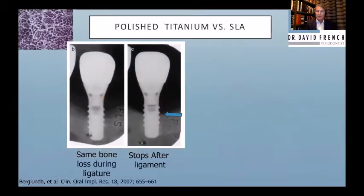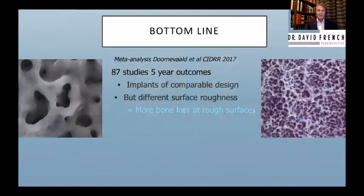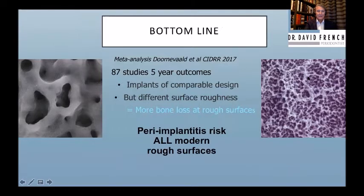Both surfaces are bad once exposed, and this is borne out by meta-analysis looking at 87 studies where implant design was the same but surface was rough versus machined — there was always more bone loss on a rough surface. Whether it's TiUnite, SLA, or any modern micro-rough surface, all are a risk factor for peri-implantitis if that surface gets exposed.